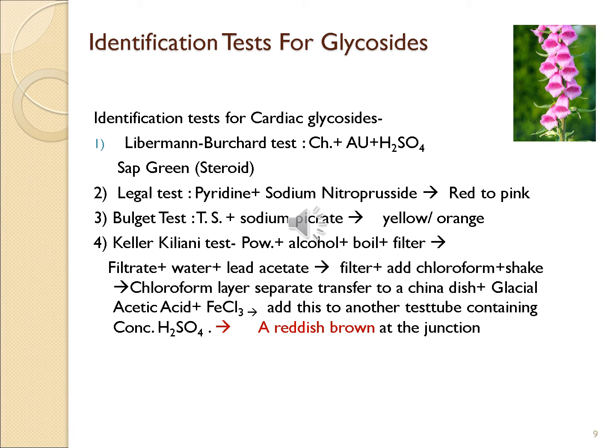For the Keller-Kiliani test: take powdered drug plus alcohol, boil carefully and filter. To the filtrate add water and lead acetate, filter again — lead acetate precipitates tannins. To the filtrate add chloroform and transfer to a separating funnel, shake for 10 minutes, then remove the chloroform layer into a china dish. Add glacial acetic acid and ferric chloride solution. Transfer this mixture slowly into a test tube containing concentrated sulfuric acid. A reddish brown color at the junction indicates presence of glycoside.